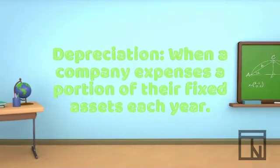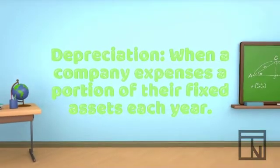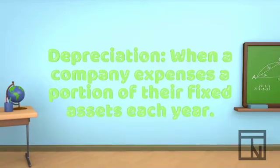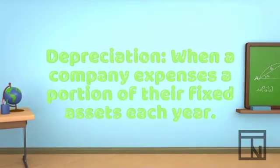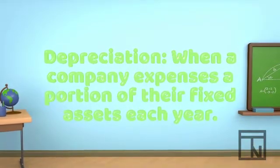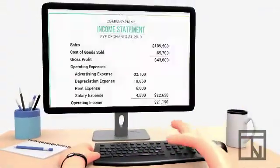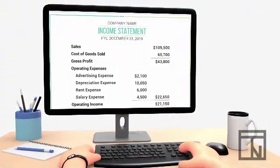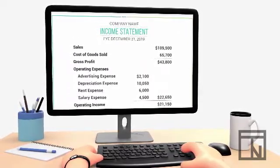As a reminder, depreciation is when a company expenses a portion of their fixed assets each year. That means that Bob will need to record his depreciation as an expense. Expenses belong on the income statement and are recorded as debits because they reduce owner's equity.